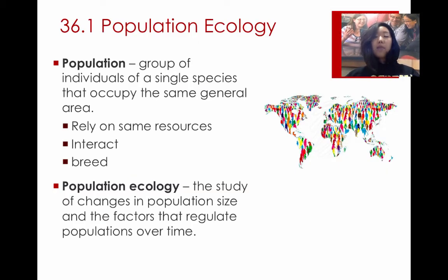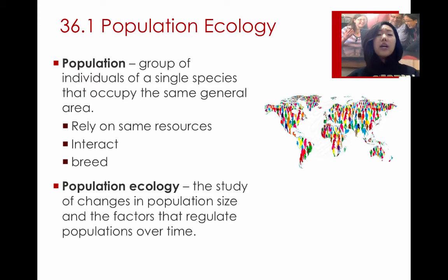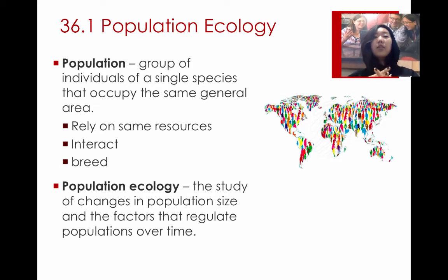Just to define a population — this is something we've discussed before in class. Remember, it's a group of individuals of the same species that occupies the same area. So it's a little bit more specific than just species; the individuals within the species have to live in the same area. Usually members of the population are going to share the same resources, they are able to interact with each other, and they can also breed with each other.